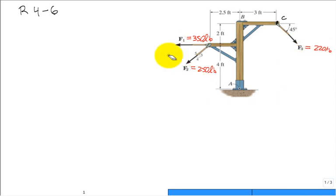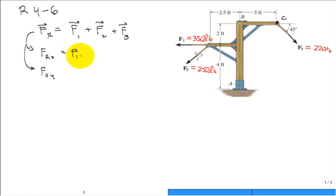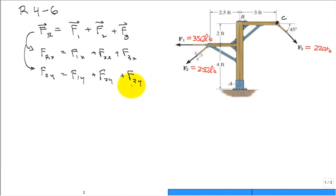We want to represent an equivalent loading to this frame using a single resultant force. The resultant force must equal the sum of the three forces on the system. We can write this as a vector equation or do it in scalar form. The resultant in x equals the sum of F1x, F2x, F3x, and similarly in y.